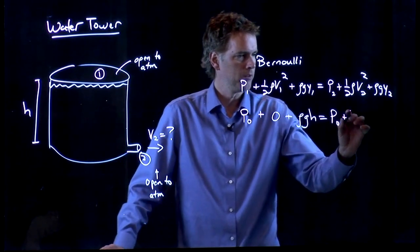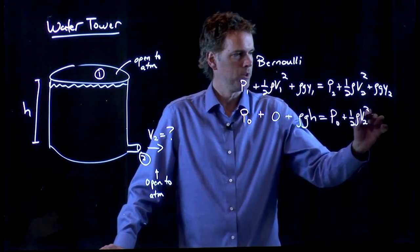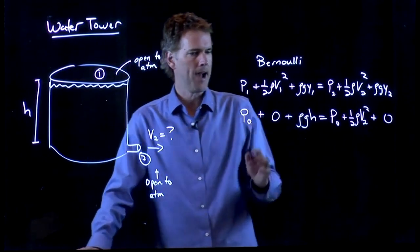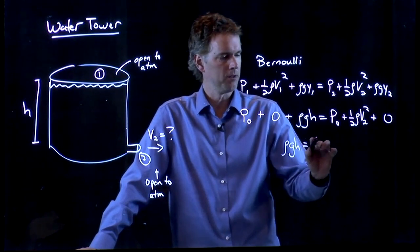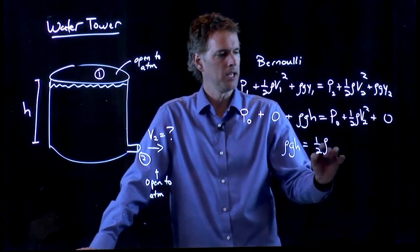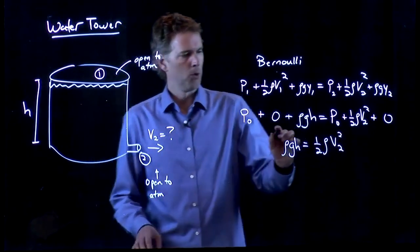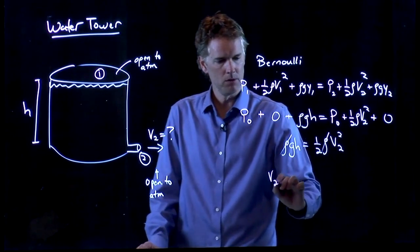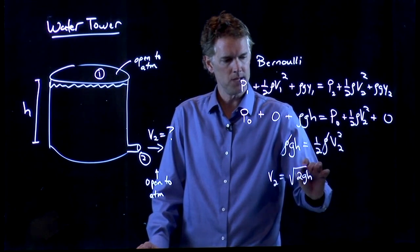V2 is what we're interested in. And we just said that we are at a height zero. And so now look what happens. The P0 is going to drop out on both sides. All I'm left with is rho GH equals one half rho V2 squared. Rho cancels out and I get V2 equals square root of 2GH.